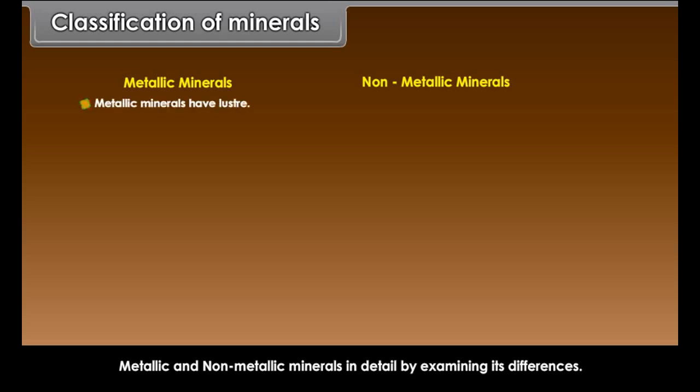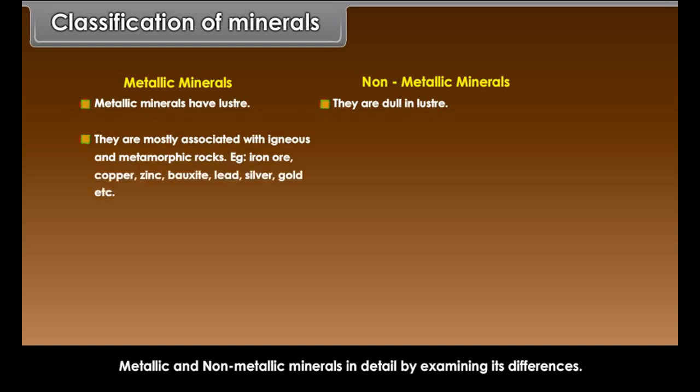Metallic minerals have luster. Non-metallic minerals are dull in luster. Metallic minerals are mostly associated with igneous and metamorphic rocks. Examples: iron ore, copper, zinc, bauxite, lead, silver, gold, etc. Non-metallic minerals are mostly associated with sedimentary or metamorphic rocks. Examples: granite, coal, sulfur, petroleum, salt, etc.